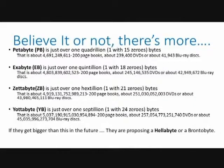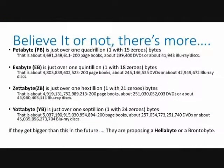Then it gets crazy — we start getting into some other crazy measurements. We have what's called a petabyte, which is just over one quadrillion, that's 15 zeros of bytes. You would have a little over four and a half trillion 200-page books, about 240,000 DVDs, and about 42,000 Blu-ray discs. After that we have what's called an exabyte — that's just over a quintillion, a one with 18 zeros. That's almost five trillion 200-page books or 245 billion DVDs. I don't know about you, but I don't plan on living long enough to watch that many DVDs in my life.